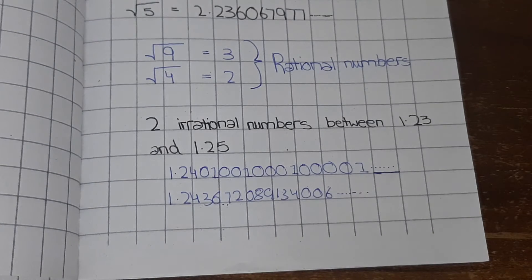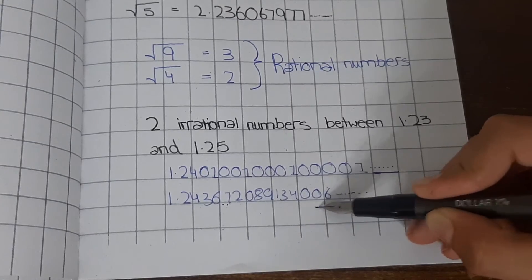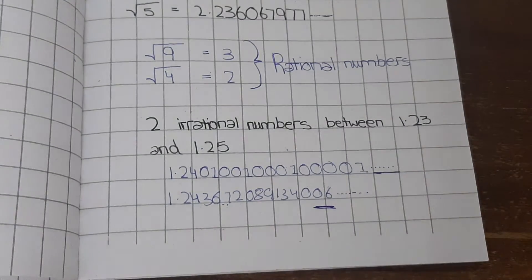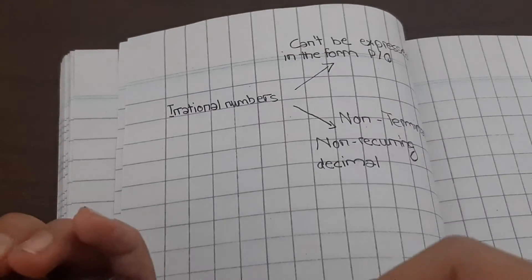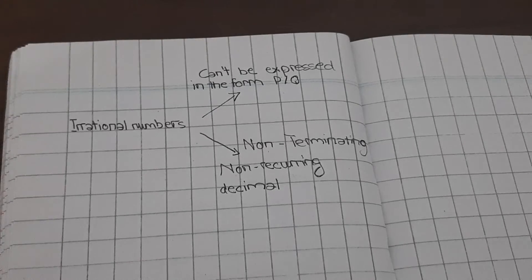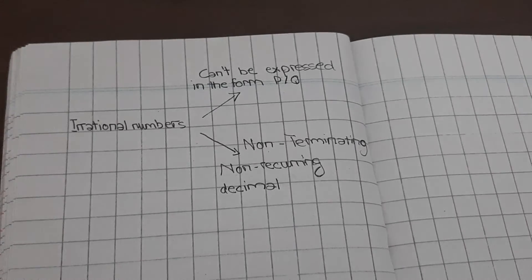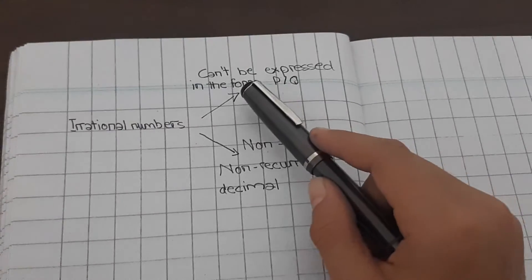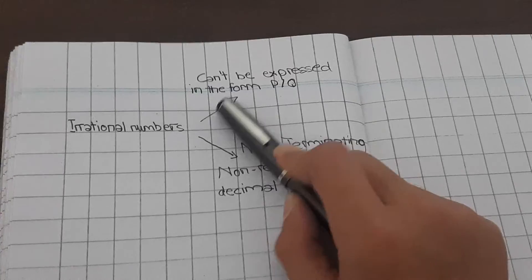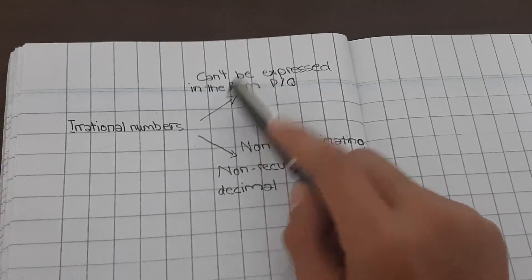Now you have to remember two points. Irrational numbers cannot be expressed in the form of p over q, and they will be non-terminating and non-recurring decimals.